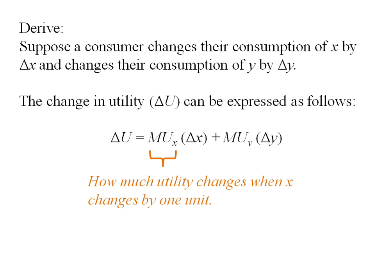We'll break this down. The marginal utility of x is how much utility changes when x changes by one unit, and then delta x is how much x is changing by. And then the same will be true for the marginal utility of y and delta y.